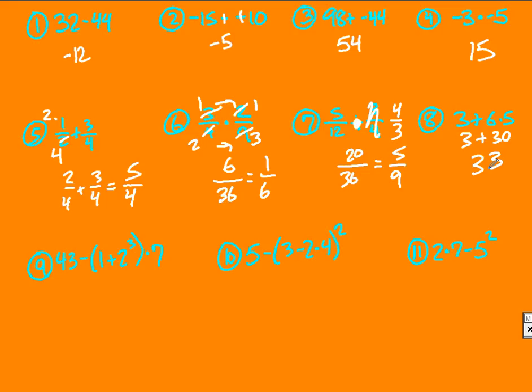Number 9, order of operations says do in parentheses first. When you do the parentheses, well inside the parentheses you need to do 2 cubed first, which is 8. So 1 plus 8 gives you 9. You still have the times 7 out here and you have the 43 as well.